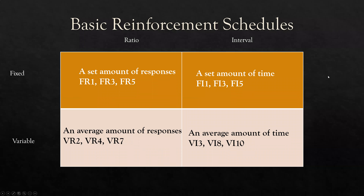As always, we start with our summary: basic reinforcement schedules. We have this idea of a fixed schedule and a variable schedule, and then a ratio schedule and an interval schedule. How we make basic reinforcement schedules is we combine an aspect of fixed and variable with an aspect of ratio and interval.